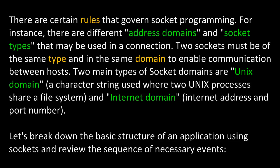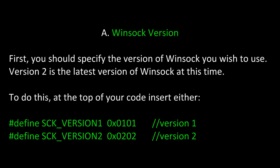Let's break down the basic structure of an application using sockets and review the sequence of necessary events. First, you might want to decide on the Winsock version. You would specify the version of Winsock you wish to use. Version 2 was the latest version of Winsock at this time and usually the one most people use. To do this, at the top of your code you could insert either define SOCK_VERSION_1 or define SOCK_VERSION_2.